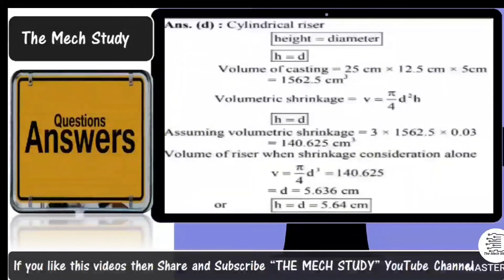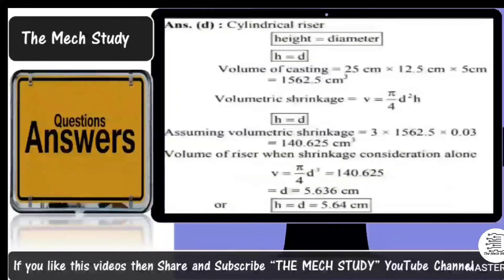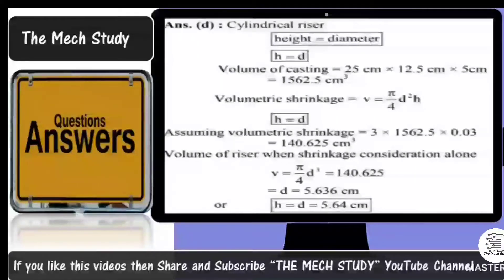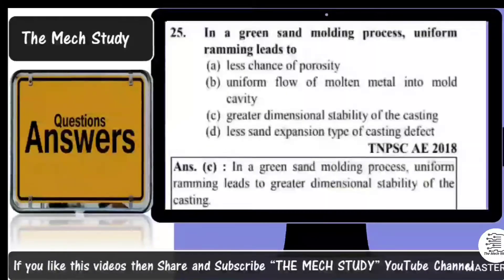The riser volume must equal three times the shrinkage volume of the casting. After multiplying: 3 × (volume of casting × 3%) = 140.625 cm³. Setting this equal to the riser volume equation and solving for D (since H = D), you get the diameter = 5.64 centimeters. Hence option D is the correct answer.